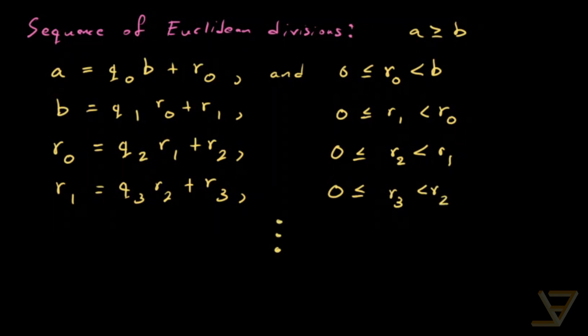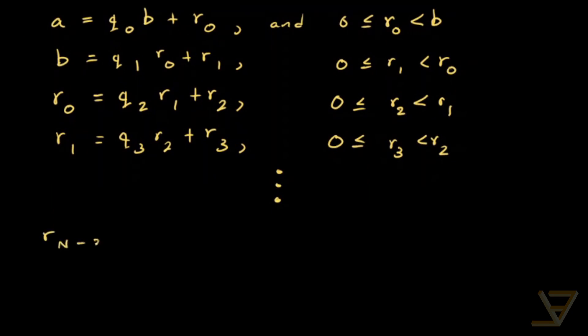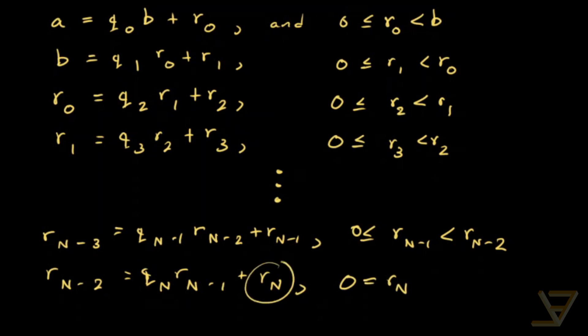And we keep going like that until we find that r(n-3) is equal to q(n-1) times r(n-2) plus r(n-1). And the last step we have r(n-2) is equal to qn r(n-1) plus rn. And what we have in this case, this is very special, we have 0 is equal to rn. So rn is equal to 0.